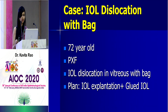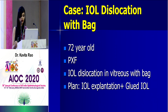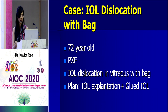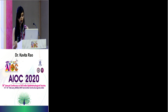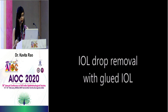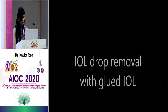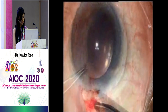Starting with the first patient — a 72-year-old with pseudo-exfoliation. The other eye had mild phacodonesis. In this eye the IOL was completely dislocated into the vitreous with the entire bag. Because of the pseudo-exfoliation and glaucoma, we decided to explant the IOL and put in a glued IOL. After making the scleral flaps, I hand over the case to the retina surgeon who performs the retinal surgery, then I take over.